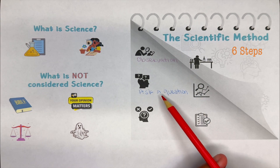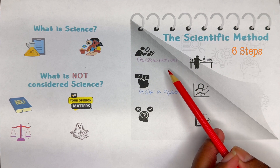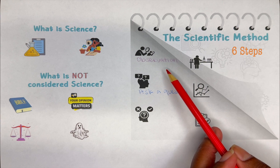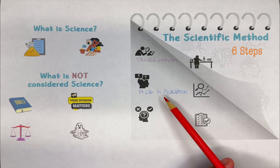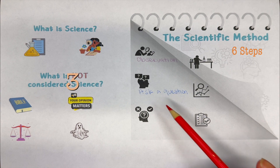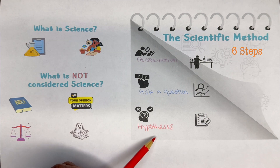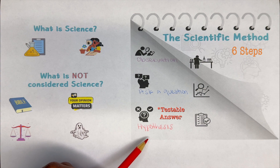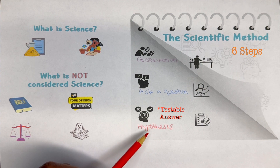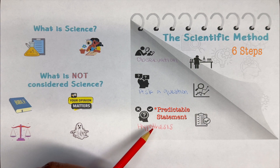Now that you've asked a question about something you observed — maybe something you saw for the first time — after asking your question, you're going to come up with what's known as a hypothesis. A hypothesis is just a potential answer, a predictable answer that can be tested. This is no longer a question.